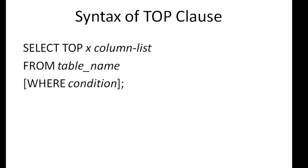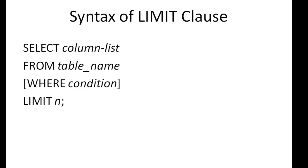The syntax of TOP is pretty simple: you have the SELECT keyword first, then you type TOP, then the number of records you want to see in your result set, followed by the column list, then the keyword FROM and the name of the table, and the optional WHERE condition. The syntax of LIMIT is in fact simpler — you have your regular SELECT query first: SELECT column list FROM table name, optional WHERE clause condition, and then you type the keyword LIMIT followed by the number of rows you want to see in your result set, and put the semicolon at the end.